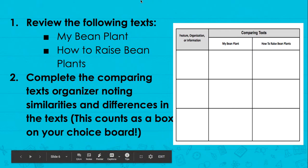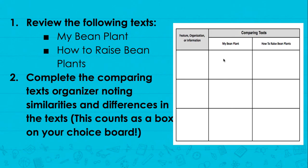This also counts as a box on the choice board — the one in the middle. You're going to write the feature, organization, or information and what you saw in each text. Maybe you want to write text features here and write about the text features in each text, or maybe you want to compare the main idea. So you could write main idea here, write the main idea of this text and the main idea of this text. You can really choose how you want to compare them.